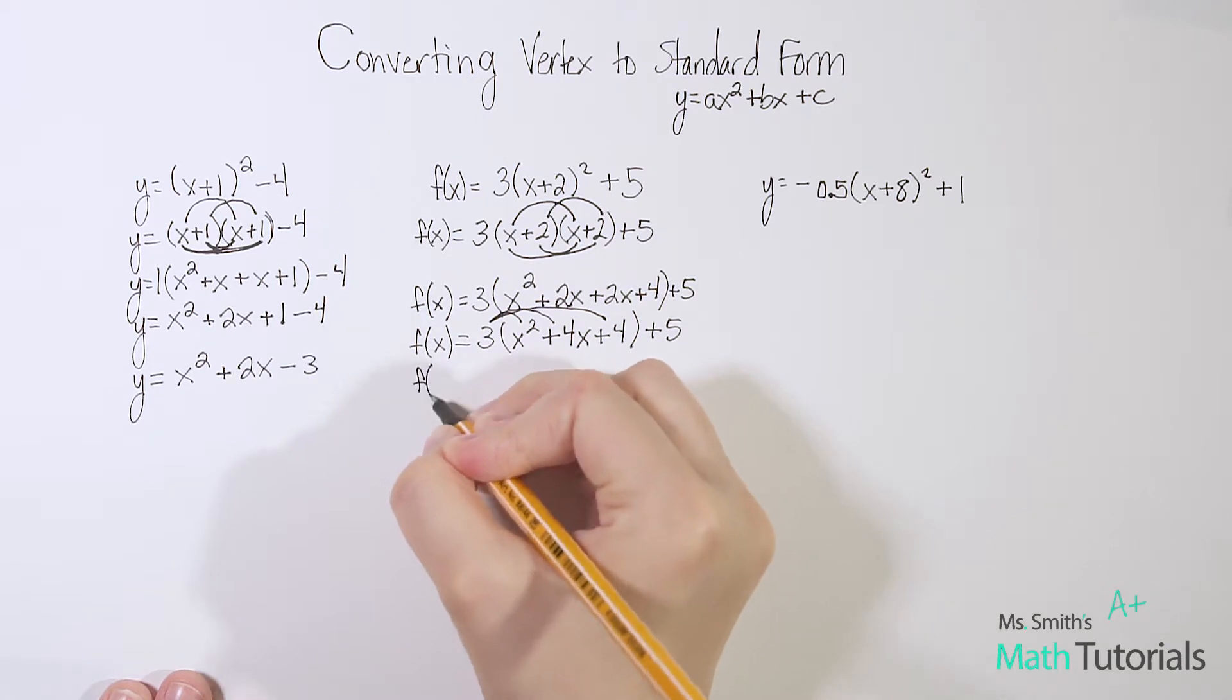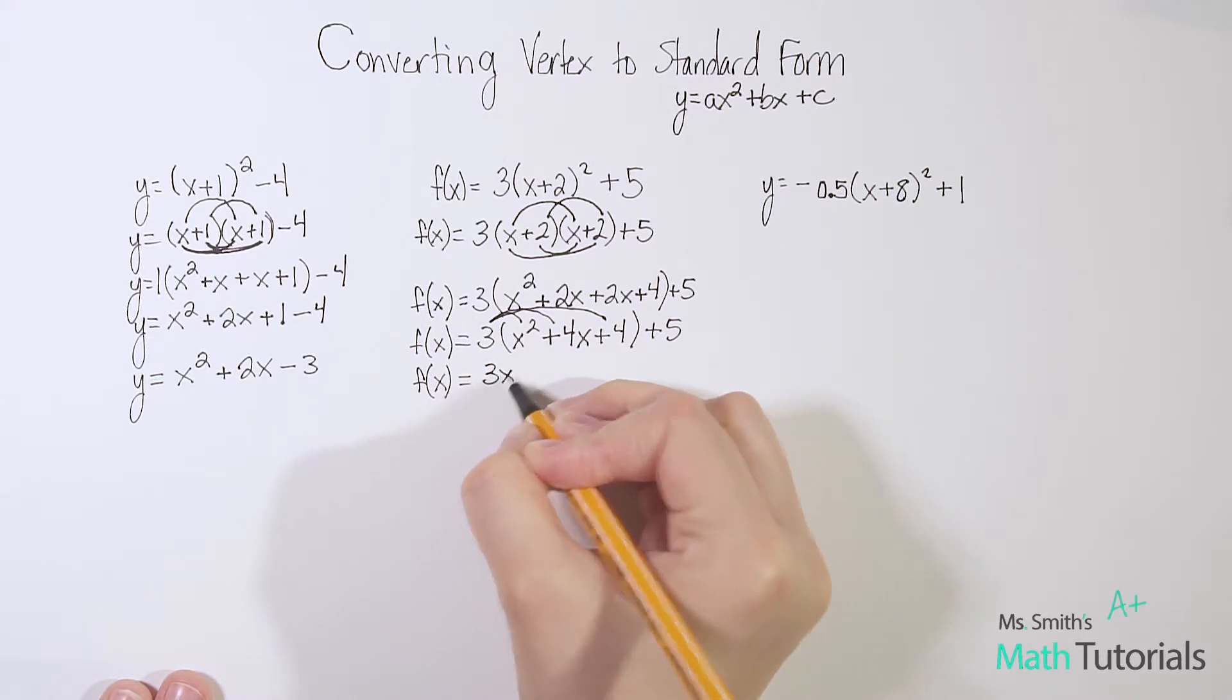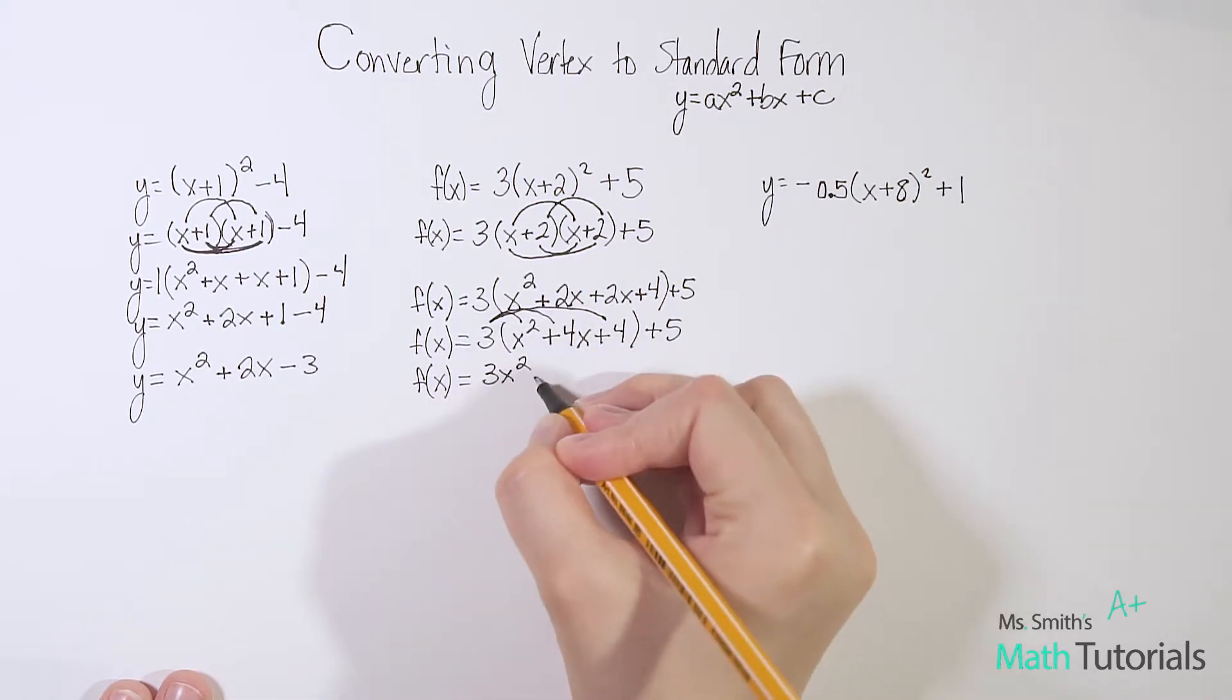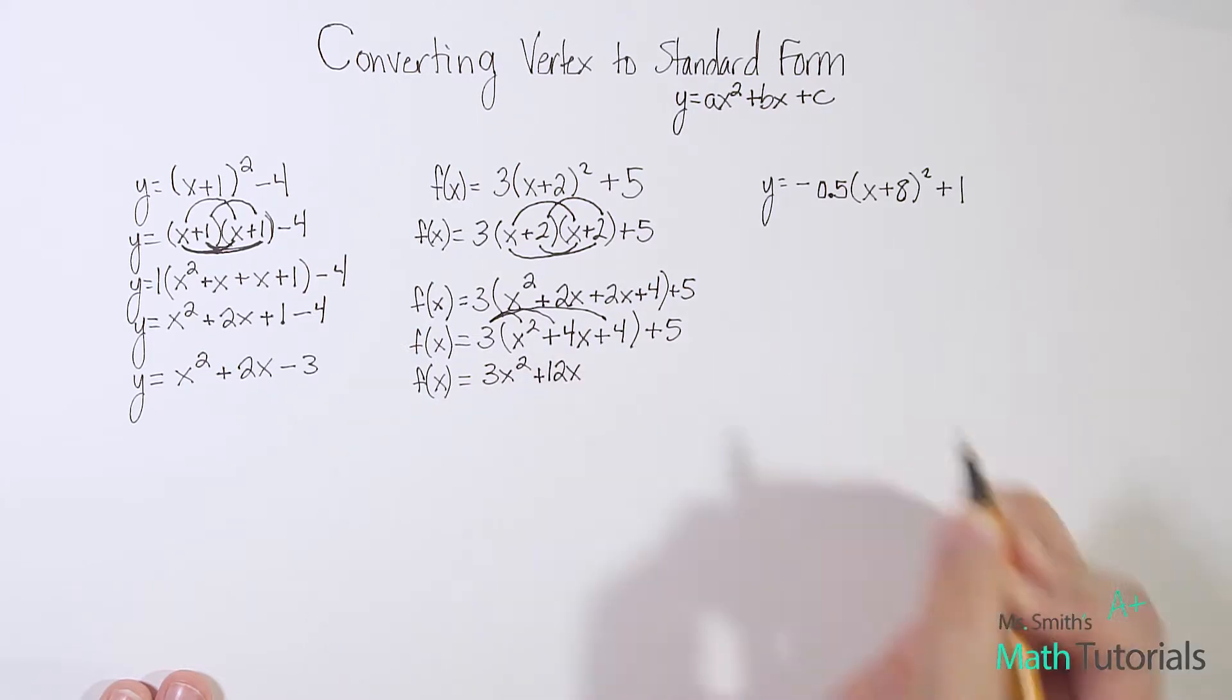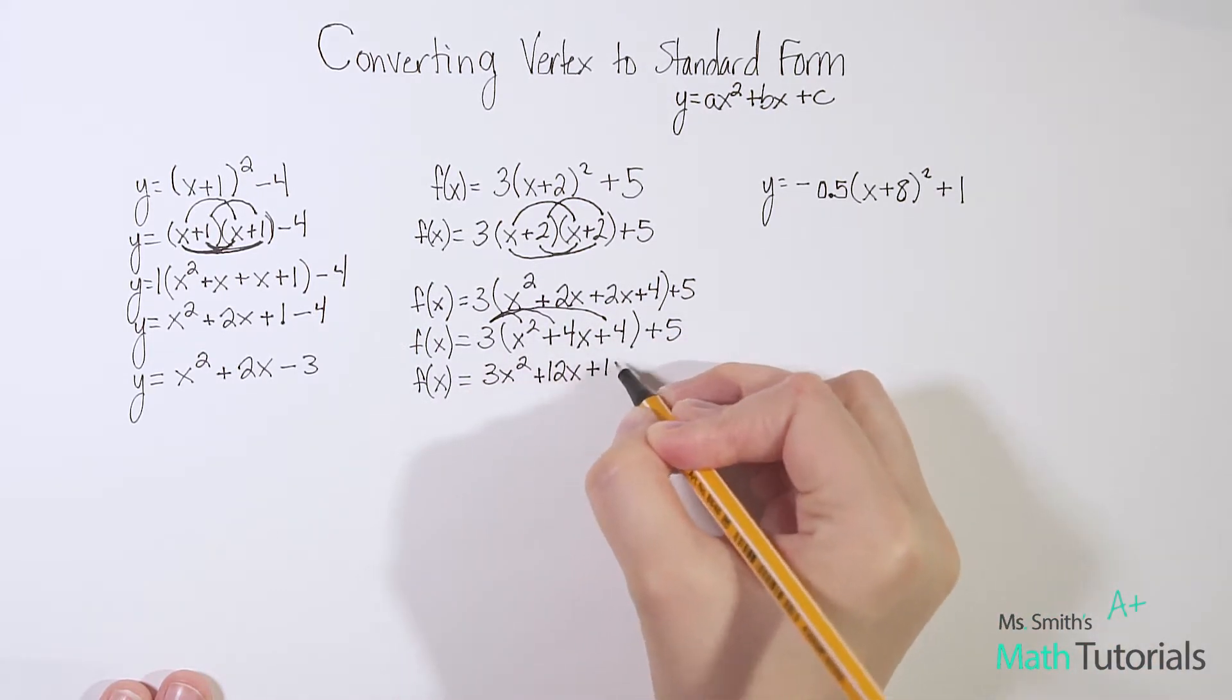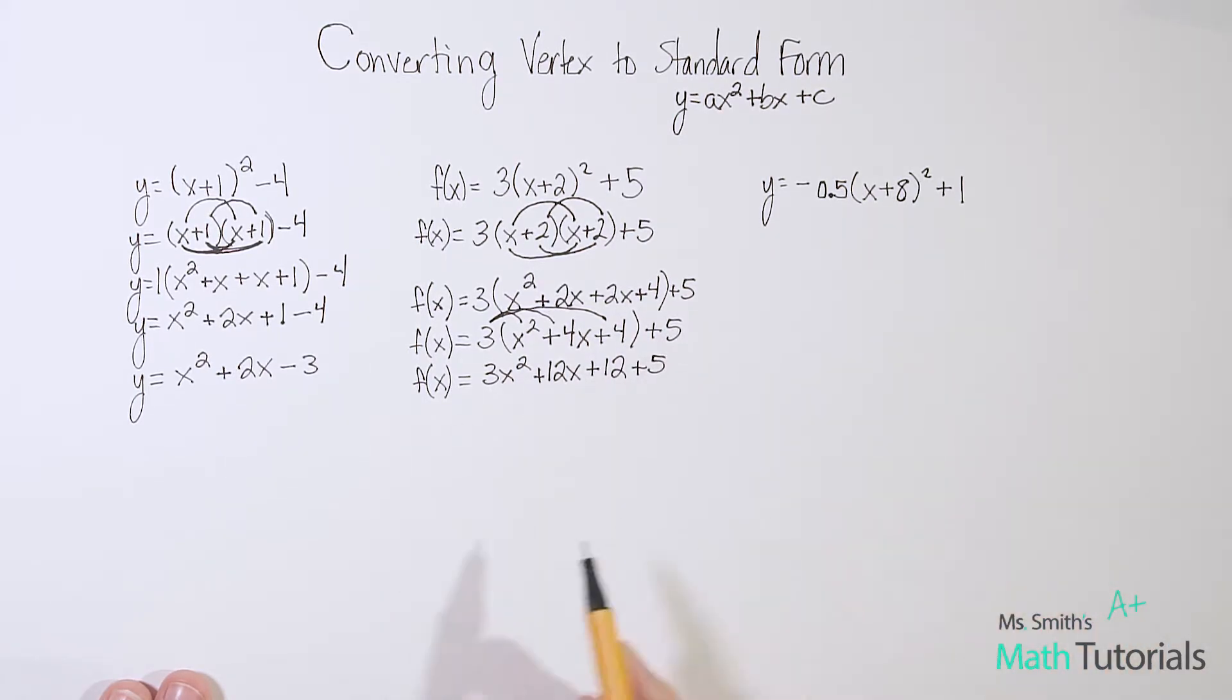Let's go ahead, let's distribute that 3 in. So I've got f(x) = 3 times x² is 3x². 3 times 4x is +12x. And then 3 times 4 is +12. The parentheses have finally gone away because I distributed the 3. So I can take that final step in combining these like terms. Finally, I can add that 5 in. And that'll give me my final answer.